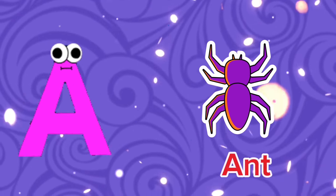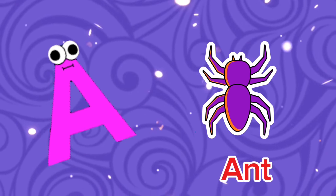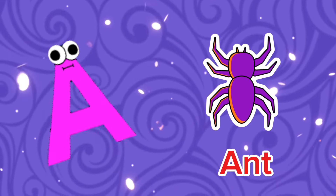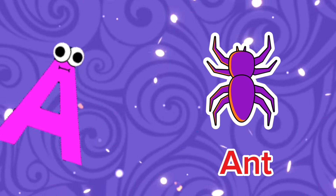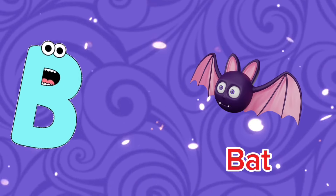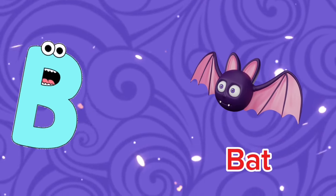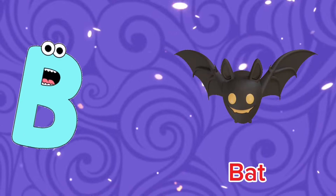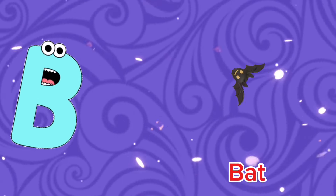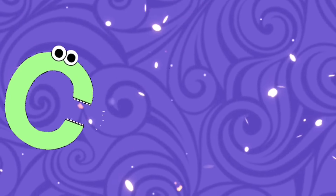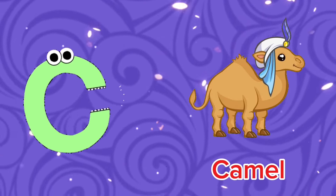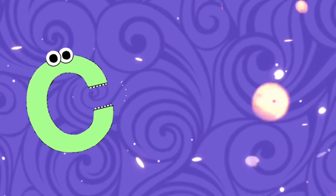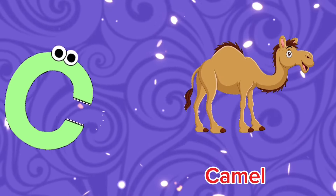A is for Ant, a-a-ant. A is for Ant, a-a-a. B is for Bat, b-b-bat. B is for Bat, b-b-b. C is for Camel, c-c-camel. C is for Camel, c-c-c.